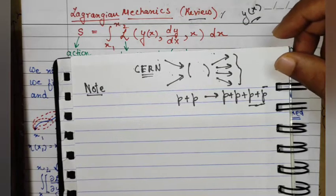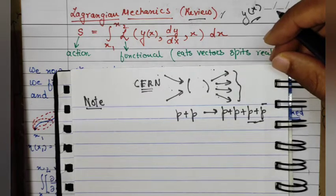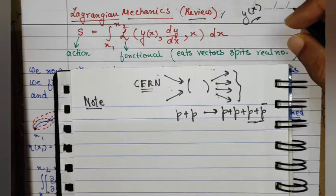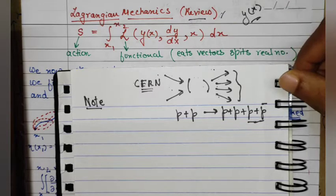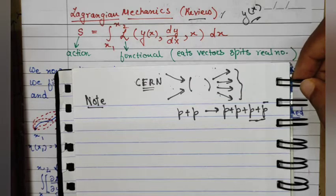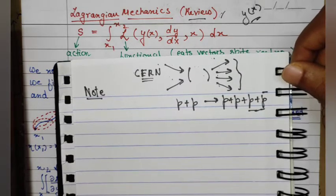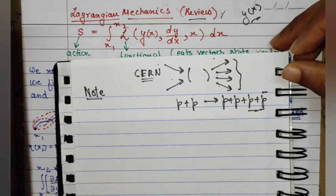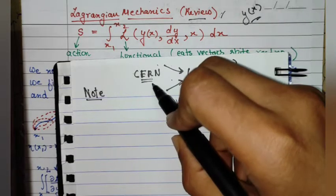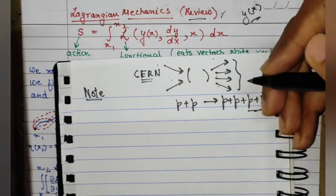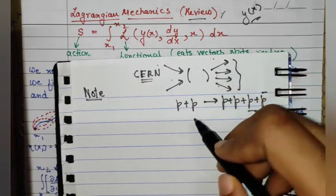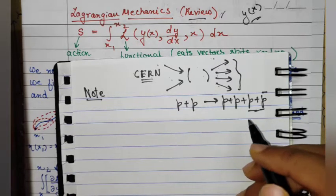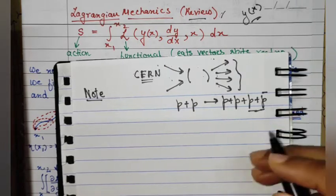Welcome to this video on Lagrangian mechanics, which is the first in a series introducing quantum field theory. One reason we need QFT is that in high-energy physics, where particles are made to collide at very high energies — like at CERN — particle numbers are not conserved. We can have many particles produced out of vacuum, and such treatment cannot be done using relativistic quantum mechanics or any ordinary quantum mechanical approach.